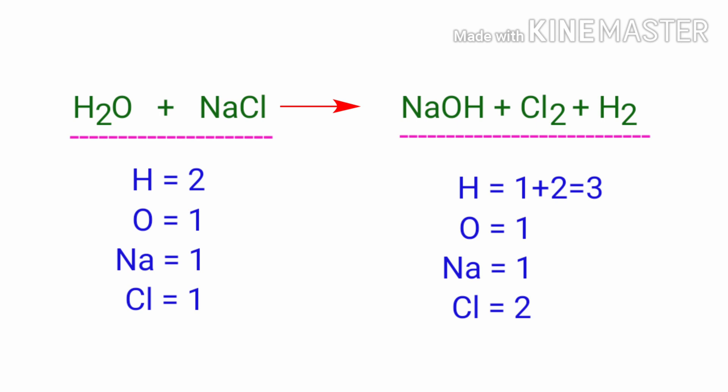In this equation, we need to balance the hydrogen atoms first. To do this, we need to have four hydrogen atoms on both sides. We need to put a coefficient of two in front of NaOH and a coefficient of two in front of H2O.